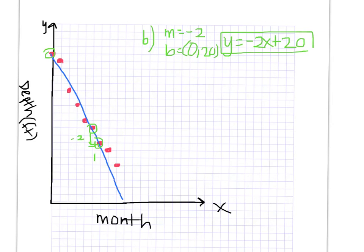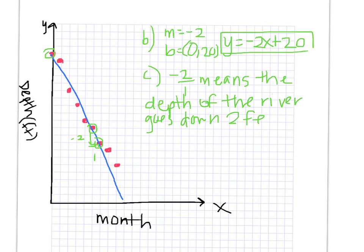Letter C asks us to interpret what both the slope and the intercept mean. So first I'll do the slope. Negative 2 over 1 means, remember interpret means to explain. So negative 2 over 1 means the depth of the river goes down 2 feet every month.